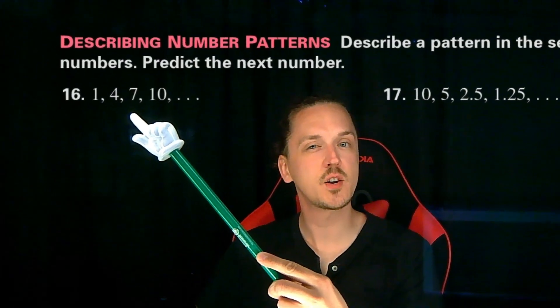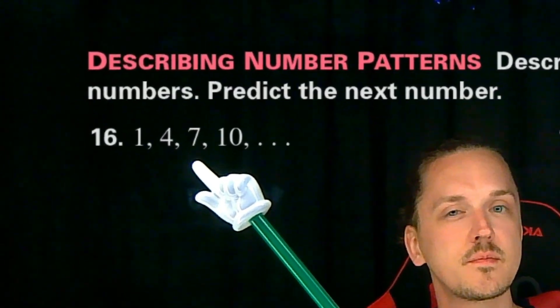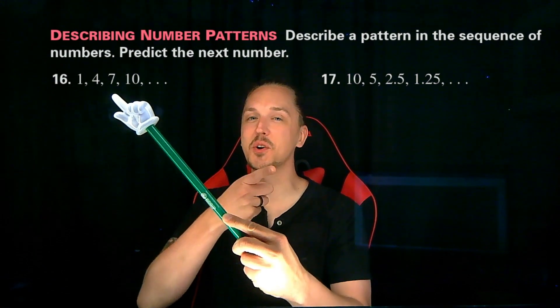The numbers go from 1 to 4 to 7 to 10. Do you see the pattern here? Hey, if you said the numbers are going up by 3, you'd be correct.